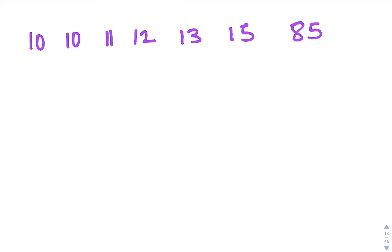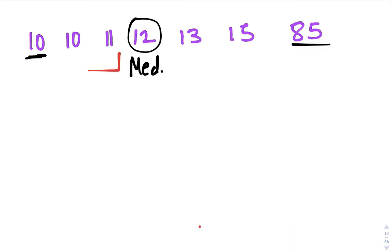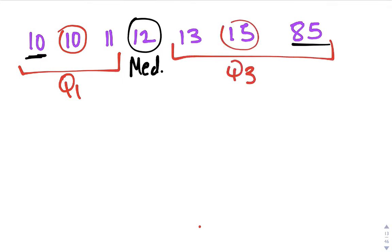The first step is to find the five number summary. So we have our minimum 10 and maximum 85. If you cross off and find the middle it's 12. So here is our median. To find Q1 you look at the lower half of the data, everything under the median, and find the middle, which would be 10. So that's Q1. And then to find Q3 you look at everything above the median, so that would be 15, Q3.